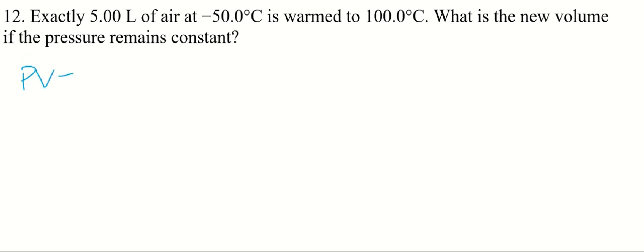All right, we have PV equals nRT. That's the ideal gas law. And what we can do is put all the constants to one side. In this case, it says pressure remains constant. So we can move pressure to the other side.